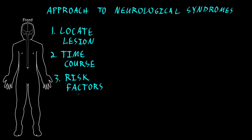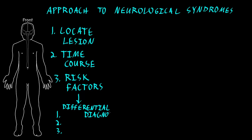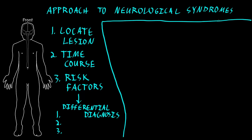By following these steps, you end up with a list of likely disorders causing the neurological syndrome, ranked in order of probability from most likely to less likely. We call this list the differential diagnosis. The differential diagnosis then determines the best strategy for tests and treatments, if any are necessary.